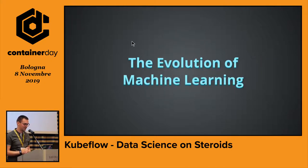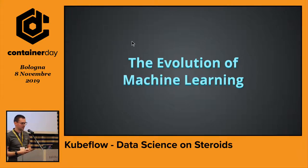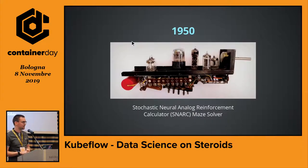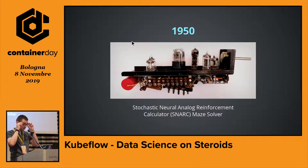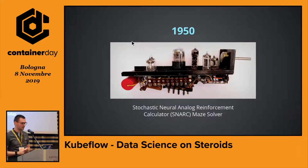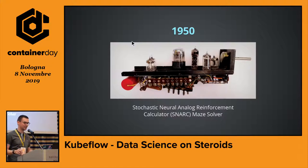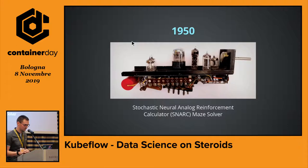Before we start with the actual topic about Kubeflow, let me look back at the history of machine learning and AI. Machine learning has its origins in the early 1950s. The first machine learning projects like the SNARK maze solver appeared in the wild. The SNARK machine is one of the first known AI neural networks ever built. It already contained around 40 neurons capable of storing calculation results and some internal memory, and was used for military use cases like autopiloting aeroplanes.